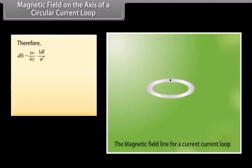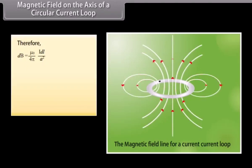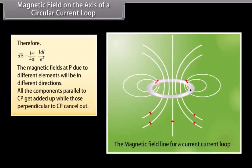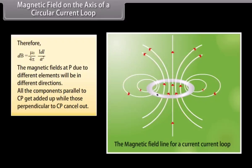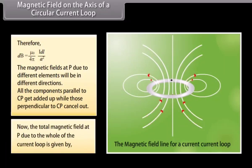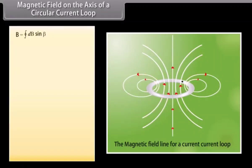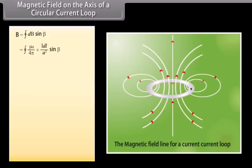Therefore, the magnetic field at P is given by (μ₀ / 4π) · idl / a². The magnetic fields at P due to different elements are in different directions. All the components parallel to CP get added up while those perpendicular to CP cancel out. The total magnetic field at P due to the whole current loop is given by the closed integral of dB sinβ.